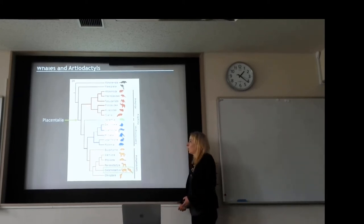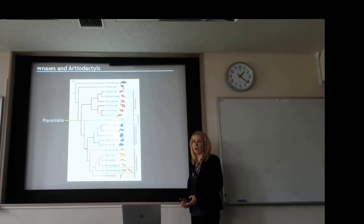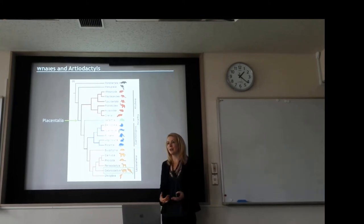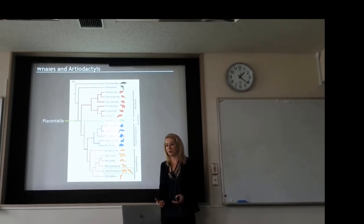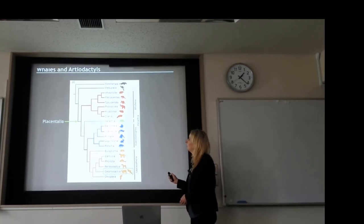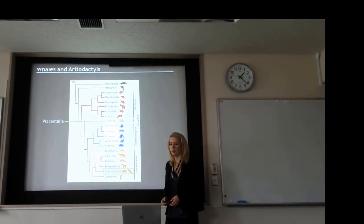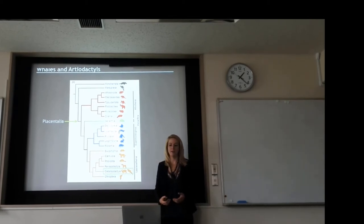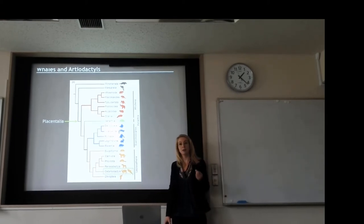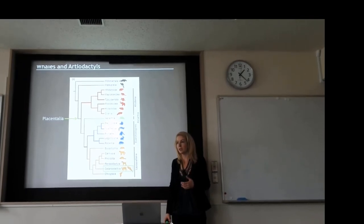Now we're looking at whales and their placement in terms of mammal phylogeny. Mammals are interesting because their entire classification is based on reproductive strategy. We have the monotremes, the marsupials like kangaroos, and then the placental mammals — which occupy a very diverse group, more diverse than any of the other mammals. Placental mammals are those with a fetus carried in the uterus of the mother, nourished via placenta, with a live birth of a fully developed offspring.